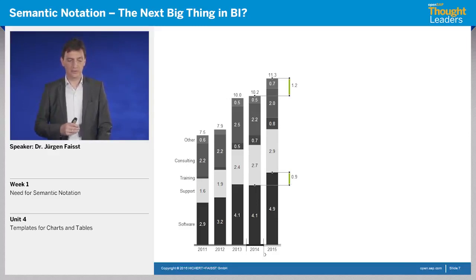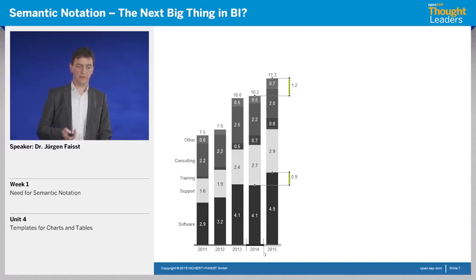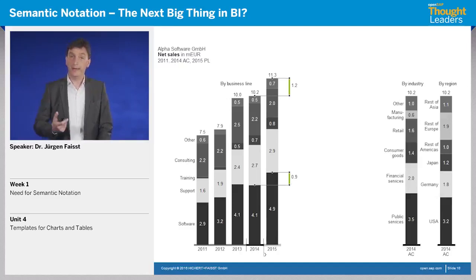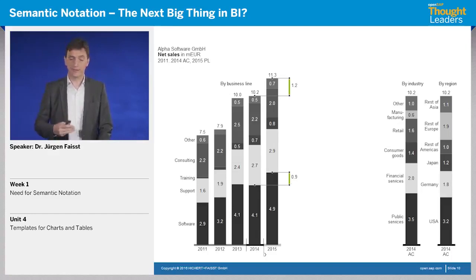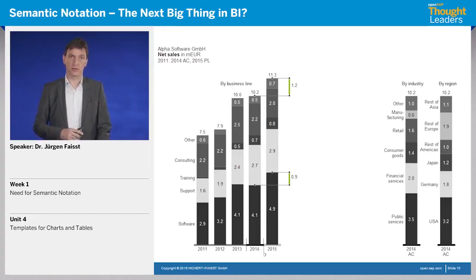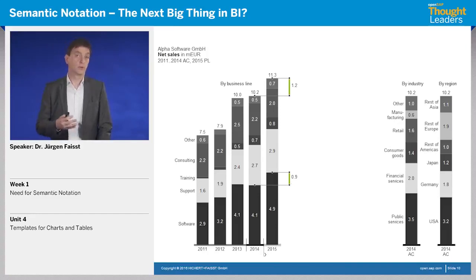We have a positive increase from 2014 to 2015. We could probably add more information by not only showing the sales by business line, but also showing the sales by industry or by region. Then we add a message and highlight the message in the chart. So at the end, we have a chart template for columns that could be used for many different purposes.